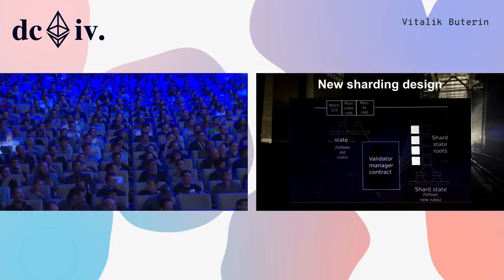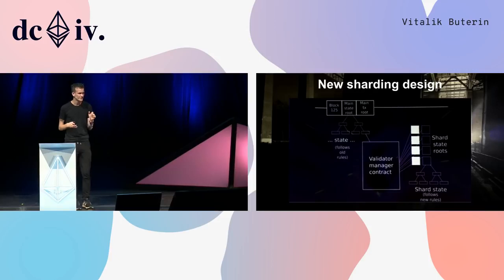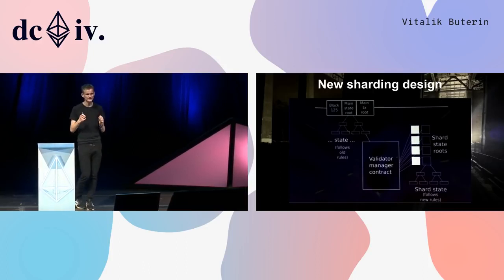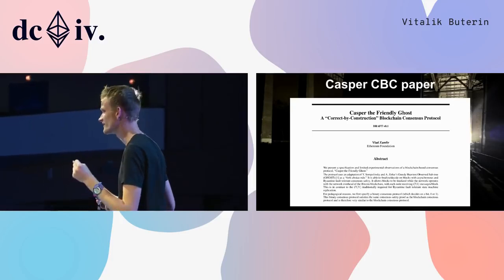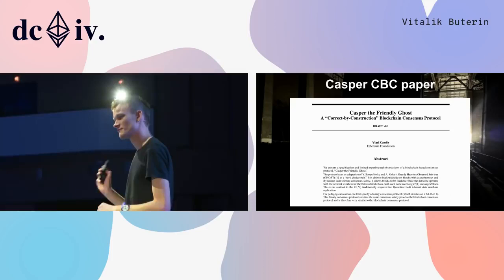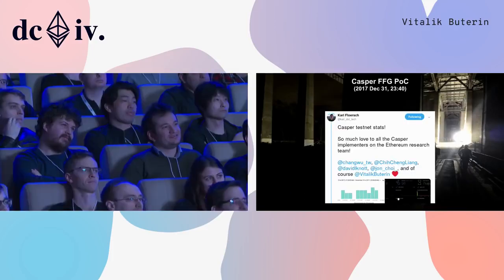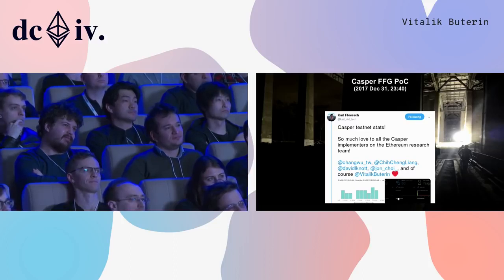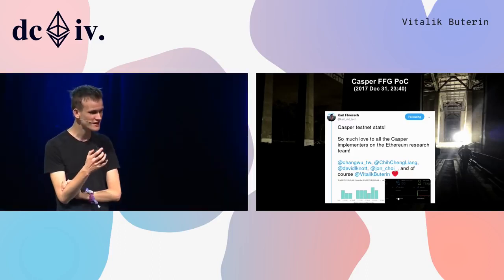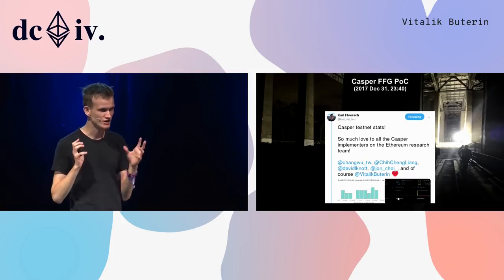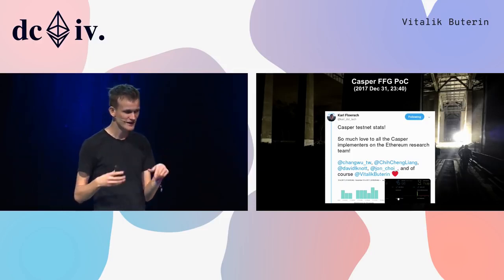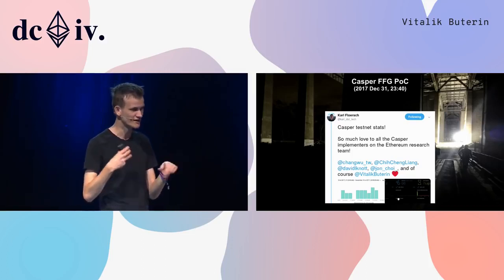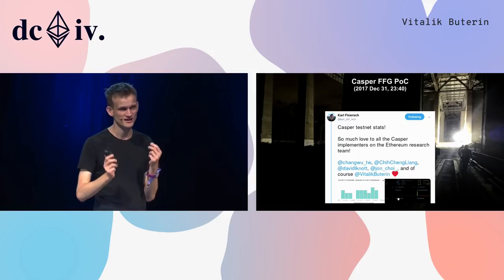Last year at Devcon I presented a new sharding design that kept the main chain and did sharding as a layer-two system on top of the existing main chain, which would then get upgraded to layer one once solid enough. From Vlad came the Casper CBC paper. The Casper FFG proof of concept was basically nailed down on December 31st, 2017 at 23:40 Bangkok time, because we happened to be in Thailand. We pretty much managed to nail down the spec of a version of hybrid proof of stake that would use the ideas from Casper FFG.